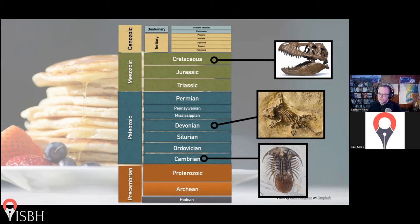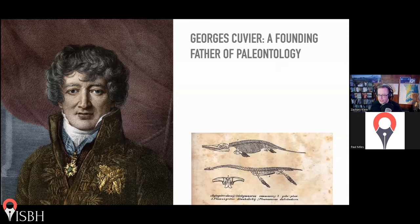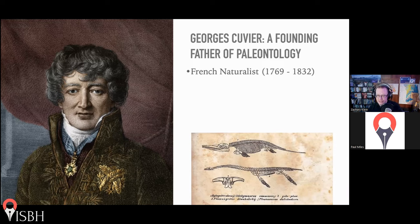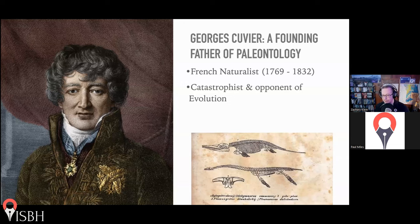These fossils have long intrigued human beings. One gentleman important in understanding how the fossil record came to be is a French naturalist by the name of Georges Cuvier. He is a founding father of paleontology. Just as with Nicolas Steno, he predates Charles Darwin, so we don't need to assume evolution is at work as we look at the history of the fossil record. In fact, Cuvier was a catastrophist and an opponent of earlier ideas of evolution by Lamarck and others, in part because of what he saw in the fossil record.